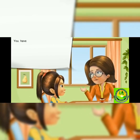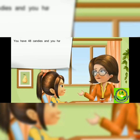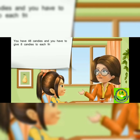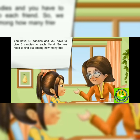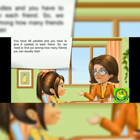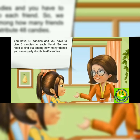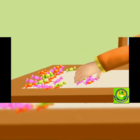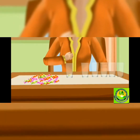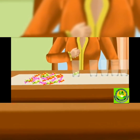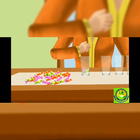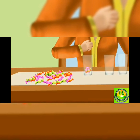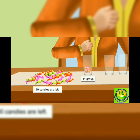For example, you have 48 candies and you have to give eight candies to each friend. We need to find out among how many friends you can equally distribute 48 candies. First we make a group of eight candies out of 48: 1, 2, 3, 4, 5, 6, 7, 8. Now 40 candies are left.